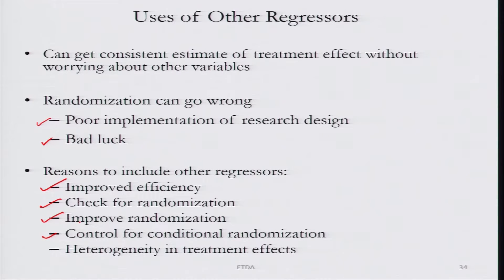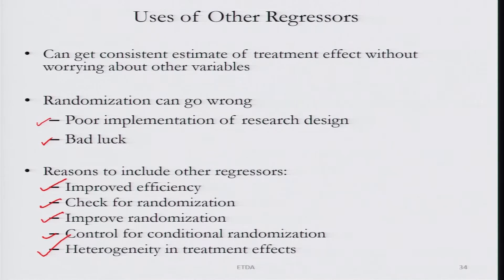Related to conditional randomization is the idea of heterogeneity in treatment effects. For instance, you might be interested in looking at the treatment effect and how it varies between individuals with low versus high cognitive ability. You might be interested in the effect of a financial literacy program on insurance take-up not just as an average treatment effect, but how the benefits vary by the type of crop a particular farmer produces. These are the additional reasons why we want to collect data on x_not_i's — the other regressors.